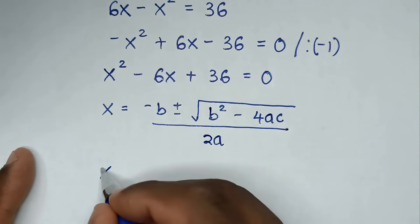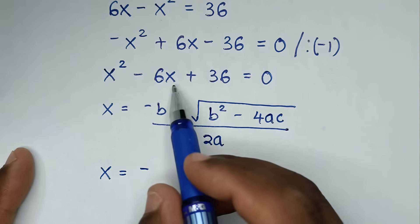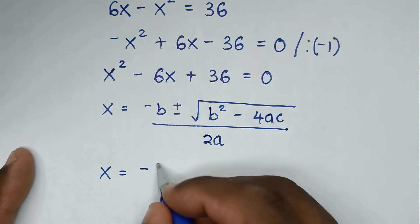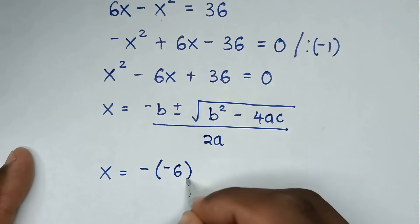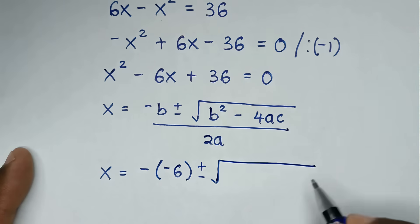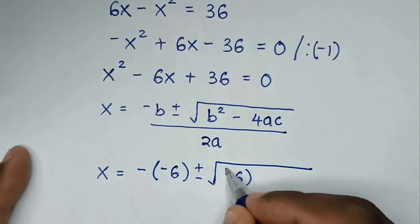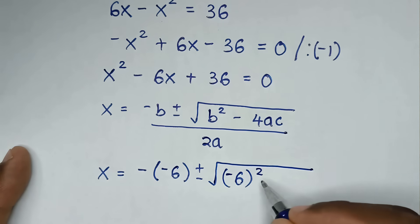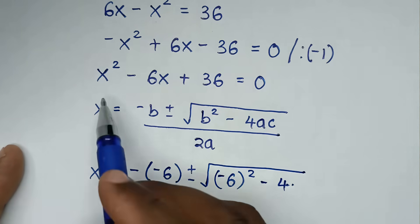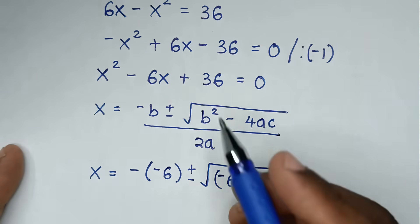So x equals negative b, where b is the coefficient of x, which is negative 6. So it will be negative of bracket negative 6 bracket, plus or minus square root of b squared, which is negative 6 squared. Then minus 4 times a, which is 1, times c, which is 36.